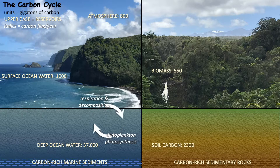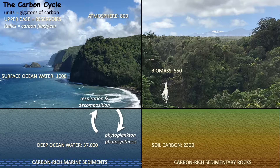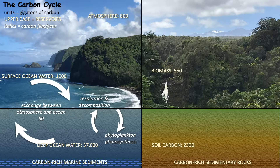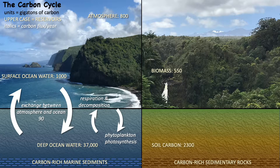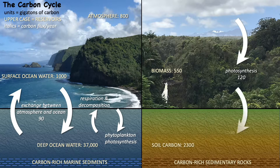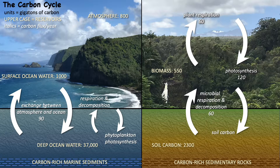In the ocean, marine plants take up carbon dissolved in water to make biomass, and respiration returns it to the water. Carbon also exchanges between seawater and the atmosphere by dissolution and exolution, and carbon can accumulate over the long term in seafloor sediments and sedimentary rocks. On land, photosynthesis and respiration also cycle carbon between the biosphere and the atmosphere, and carbon accumulates in soils as organic matter.